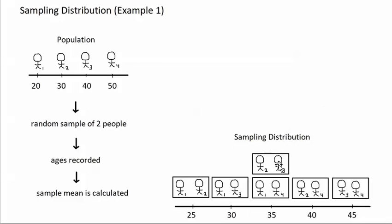In a sampling distribution, the possible samples aren't all equally accurate. Some of them are more accurate, and others are more extreme. Person 1 and person 2 is a fairly extreme sample, because the sample mean will be the lowest number it could possibly be. Person 3 and person 4 is also a pretty extreme sample, because the sample mean will be the highest number it could possibly be. The two samples in the middle are the most accurate, because if the person gets person 2 and person 3, or person 1 and person 4, the sample mean will be 35, exactly the same as the population mean.